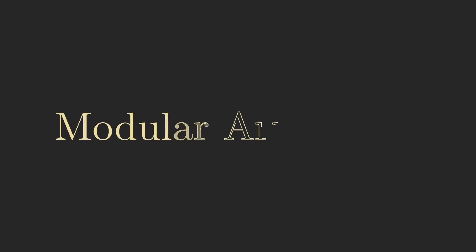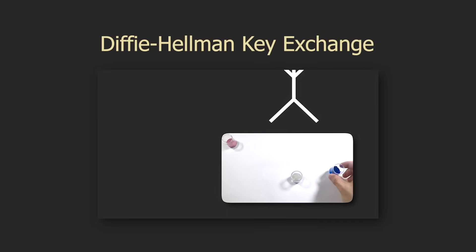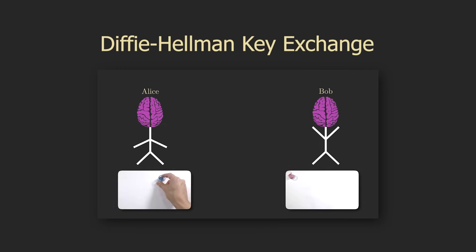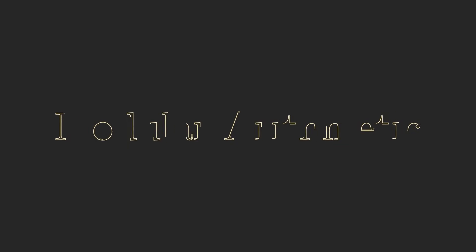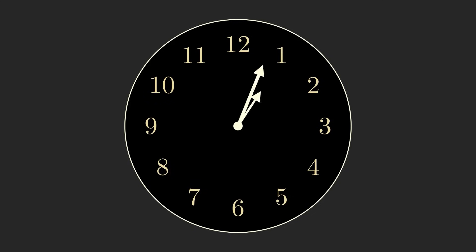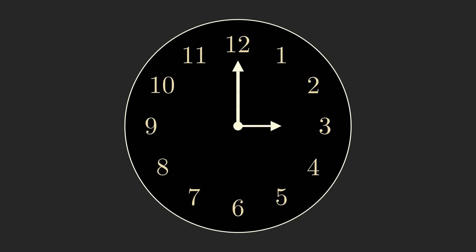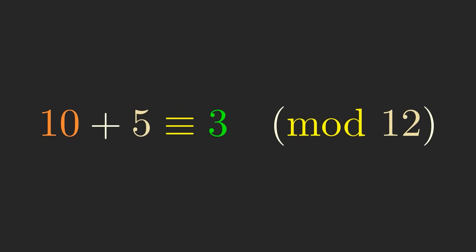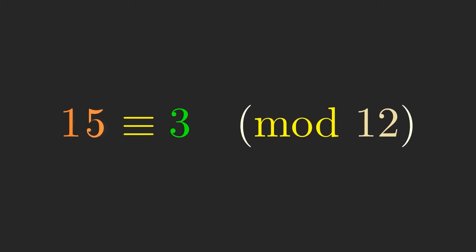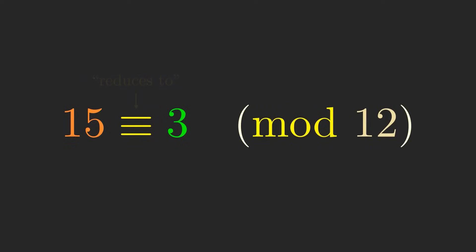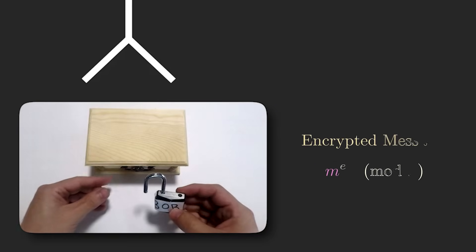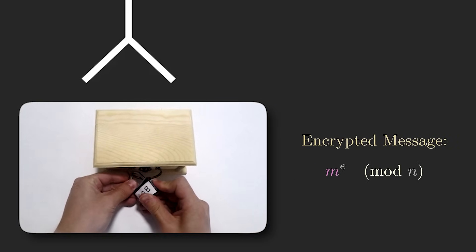The basis for RSA is something called modular arithmetic, which I explained in my previous video about a different encryption scheme known as Diffie-Hellman key exchange. In modular arithmetic, numbers wrap around once they reach a certain value. A nice real-world example of this is a clock. We would say 5 hours past 10 o'clock isn't 15 o'clock, but rather 3 o'clock, since the numbers wrap around after 12. In algebraic notation, we'd write this as 10 plus 5 is equivalent to 3 in mod 12, mod standing for modular arithmetic. Essentially, you can think of this as the number 15 getting reduced to 3 in mod 12, since it's 3 more than a multiple of 12. Now we're ready to learn the actual RSA procedure, which uses modular arithmetic in a special way to transform messages so that no one but the intended recipient can decode them.